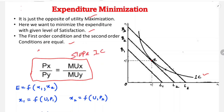The equilibrium condition is that the slope of the indifference curve must equal the slope of the budget line. The slope of the budget line is P1 by P2, and the slope of the indifference curve is MUx by MUy. Expenditure depends on two goods — it depends on their prices.